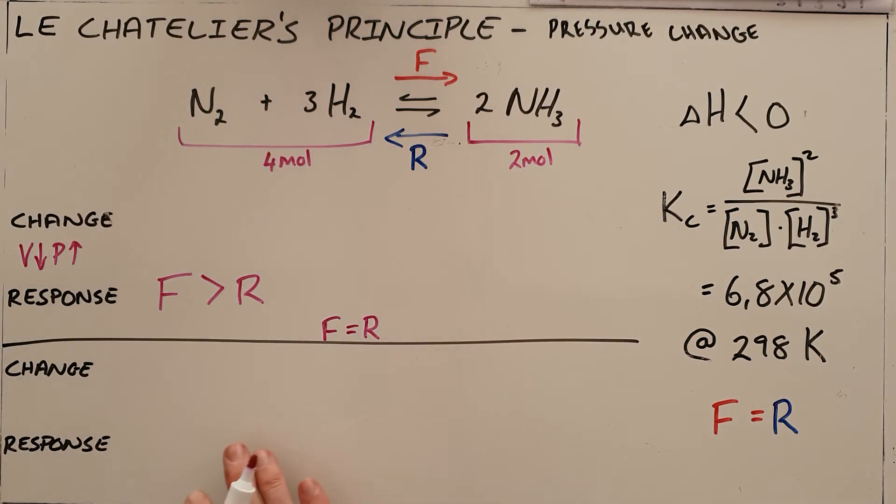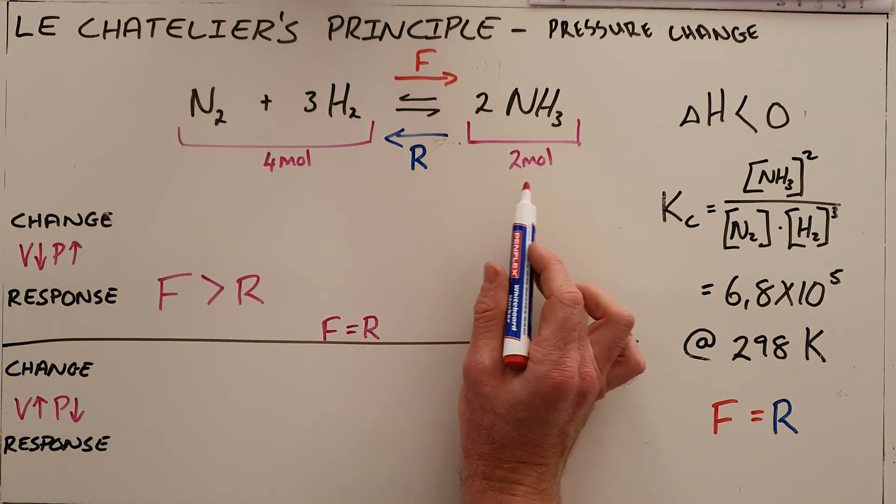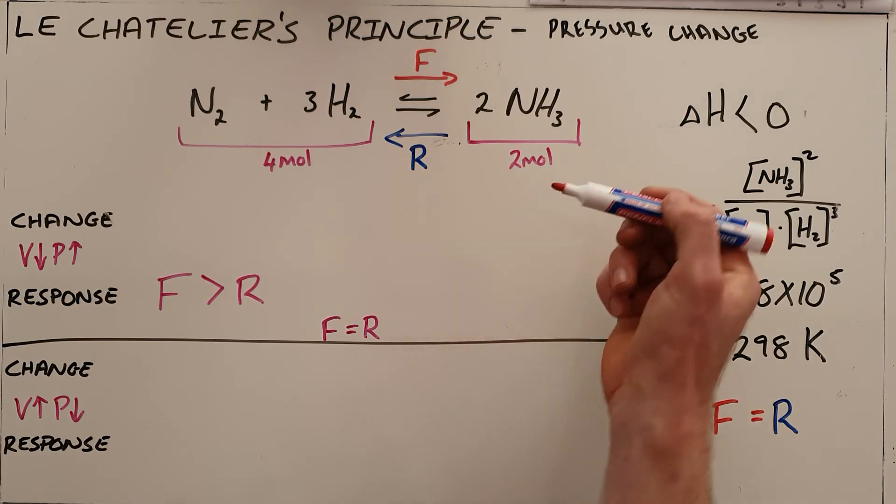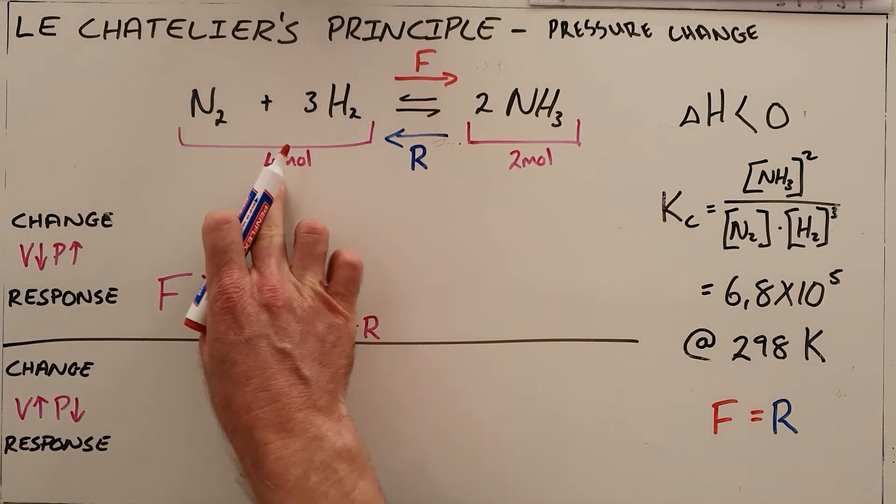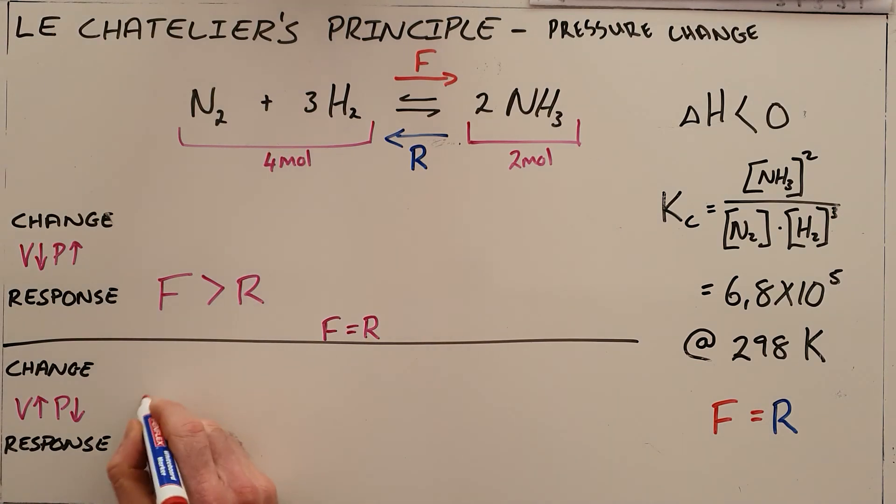The second option would be what would happen if we increase the volume of the system, which would thereby decrease the pressure. And we know that increasing the volume, decreasing the pressure means that there is now more space available. So the reaction favours the direction that produces more stuff. In this case, the reverse direction produces 4 moles. So we say that the rate of the reverse reaction is temporarily greater than the rate of the forward reaction.